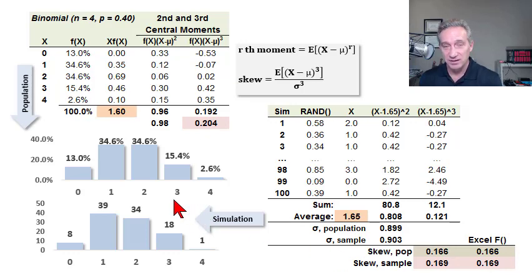I'd like to illustrate the calculation of skew using a binomial distribution. Although we could use any discrete distribution, the binomial is convenient. My binomial has the following parameters, n equals 4, so it's a very small sample, and the probability of success is 40%.